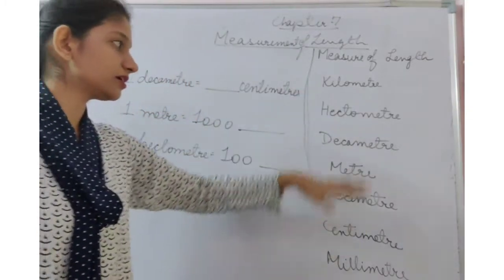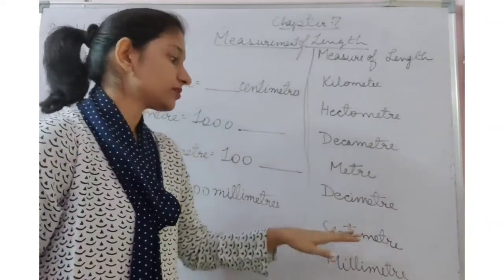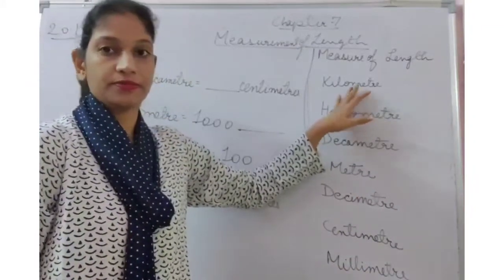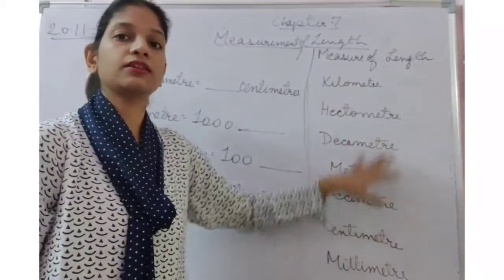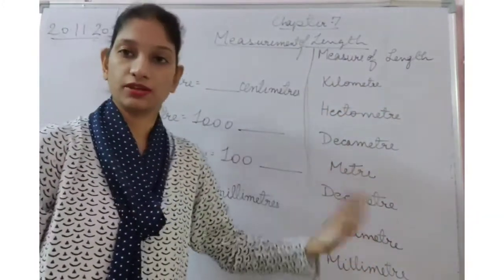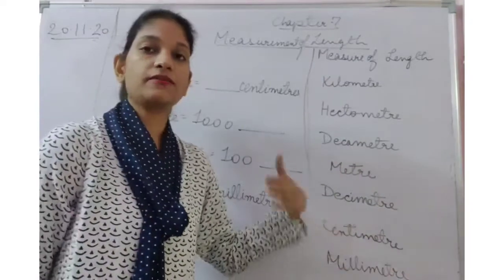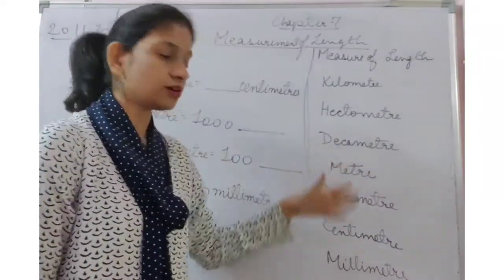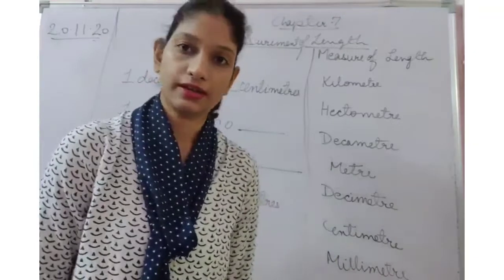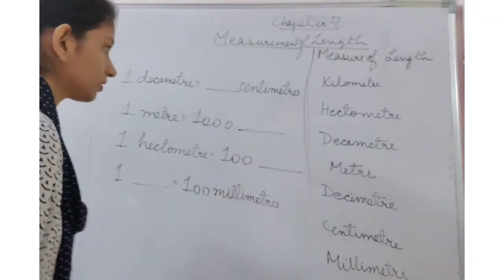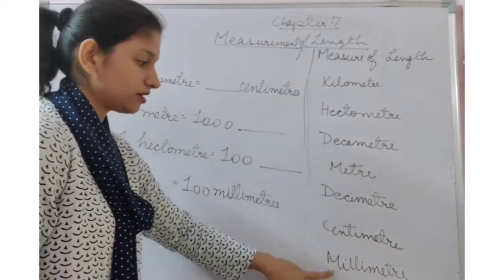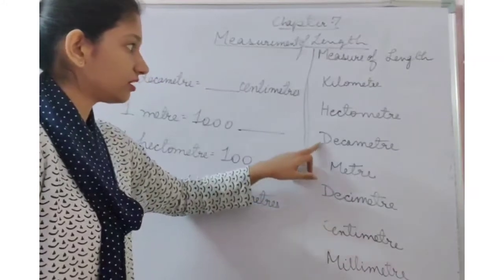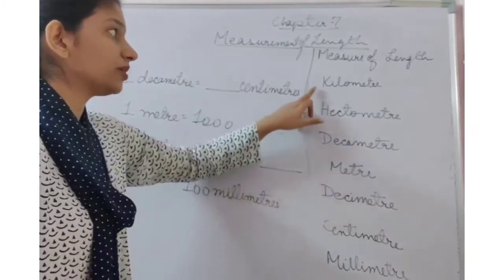Now there are certain units which come between the millimeter and the kilometer — these are new terms which we need to learn, and we will see the conversion from one unit to another. The full ladder is: millimeter, centimeter, decimeter, meter, decameter, hectometer, kilometer.